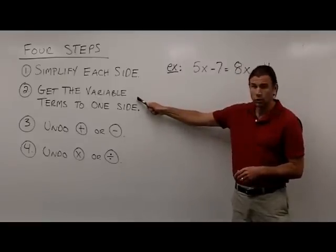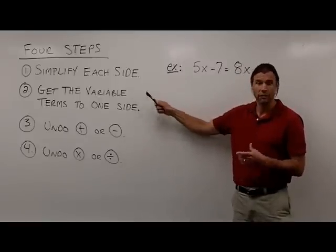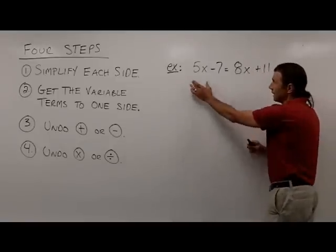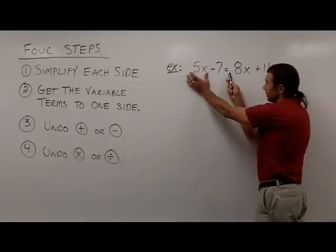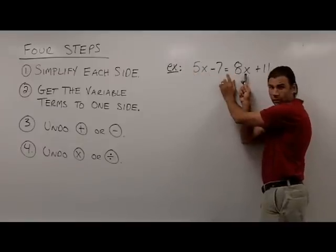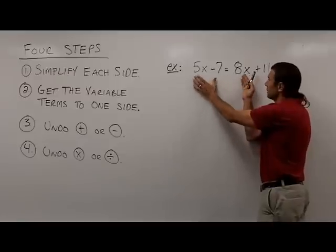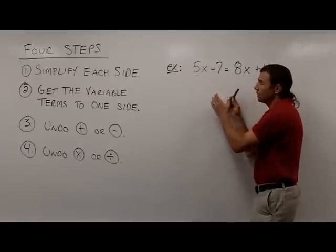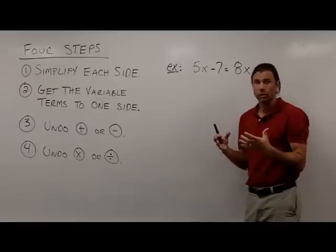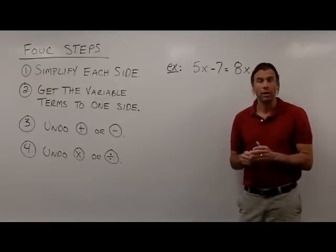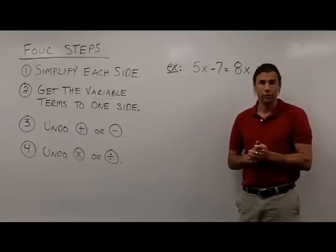The reason I need step 2 is because I have variable terms on both sides. If you take a look at my equation here, I have variables over here on the left side of the equal sign, and I also have variables over here on the right side. It's going to be impossible to isolate the variable with them on both sides. So what I need to do is get all the variable terms to one side. The easiest way to do this is by moving the smaller variable term.